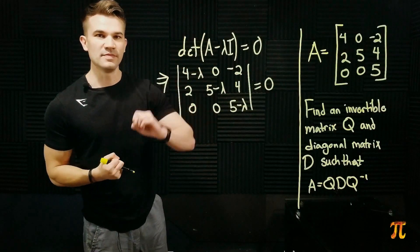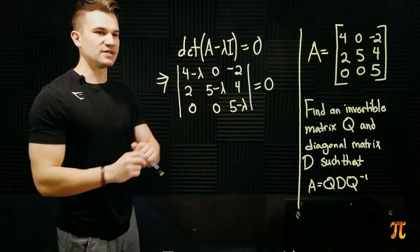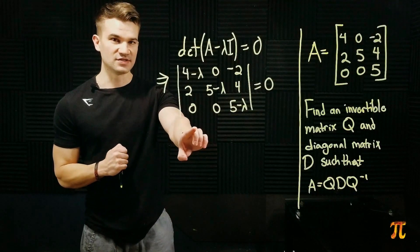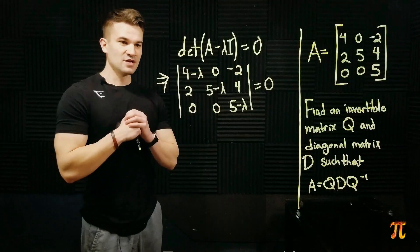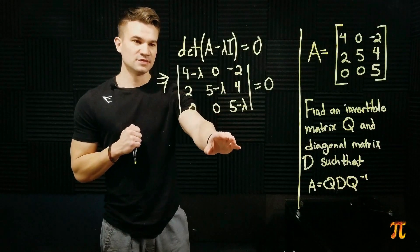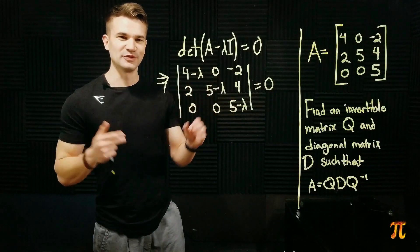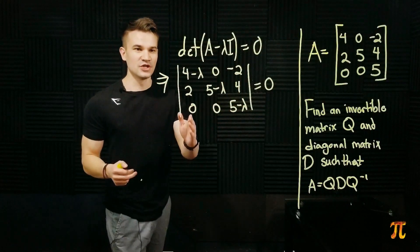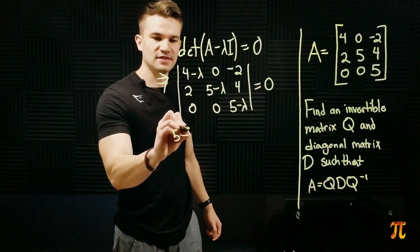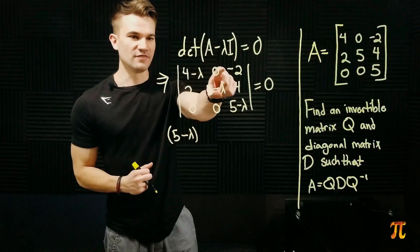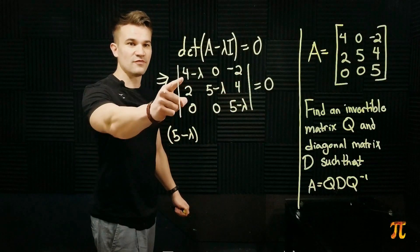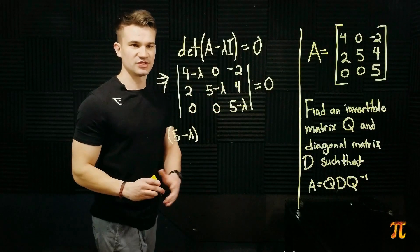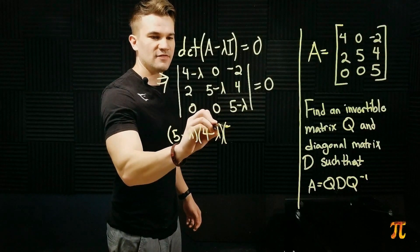So, here is the matrix A minus lambda I and we're taking its determinant, which I denote with the straight bars. The best way to find the determinant of this matrix is to go along this row here because there are two zeros. We're going to have 5 minus lambda times its cofactor matrix, times the determinant of the matrix that we get when we remove the third row and third column. If we do that, we're going to get 5 minus lambda times the determinant of this matrix here, which is 4 minus lambda times 5 minus lambda minus 0 times 2, which is 0. So we just get 4 minus lambda times 5 minus lambda.